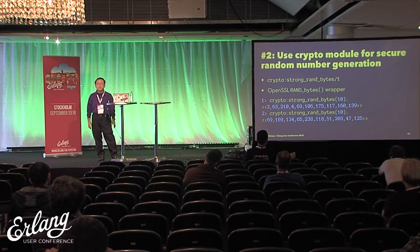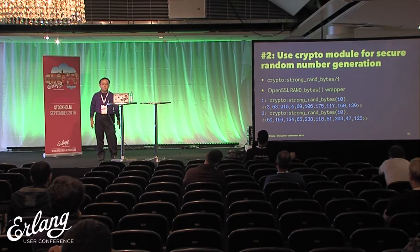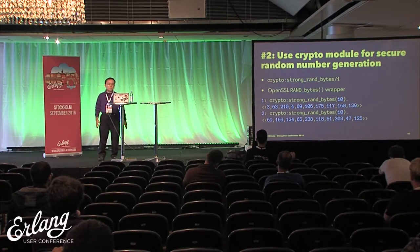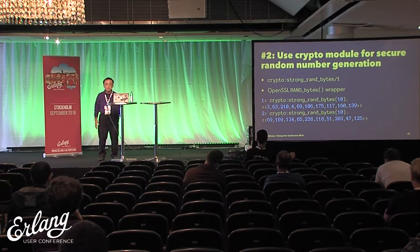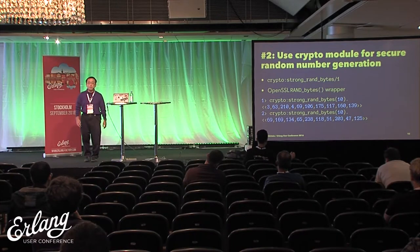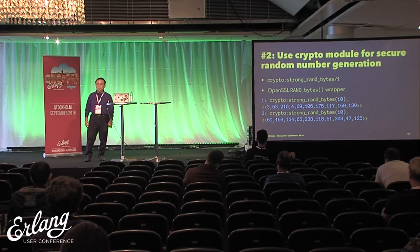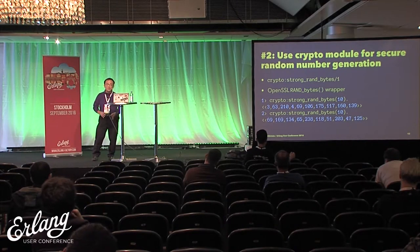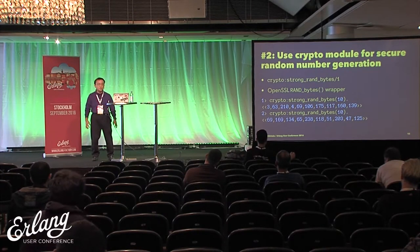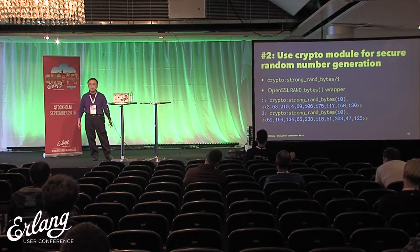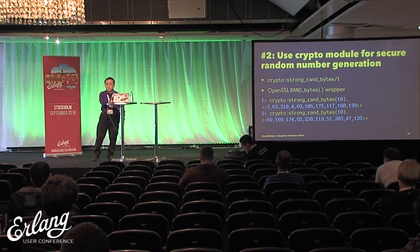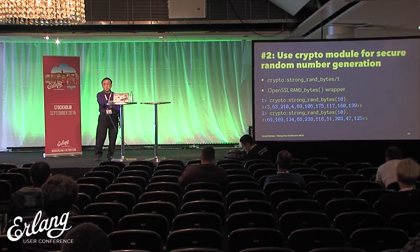Number two: if you're going to generate passwords, use the crypto module for secure random number generation. If you need a randomly generated strong password or key, use the crypto module, which is a wrapper of the OpenSSL rand_bytes function. OpenSSL indeed has lots of problems but it's still better than your code — I can guarantee. In most cases, OpenSSL gives you enough security on generating random numbers. Use the function called crypto:strong_rand_bytes. Remember, the other rand_bytes function is deprecated.